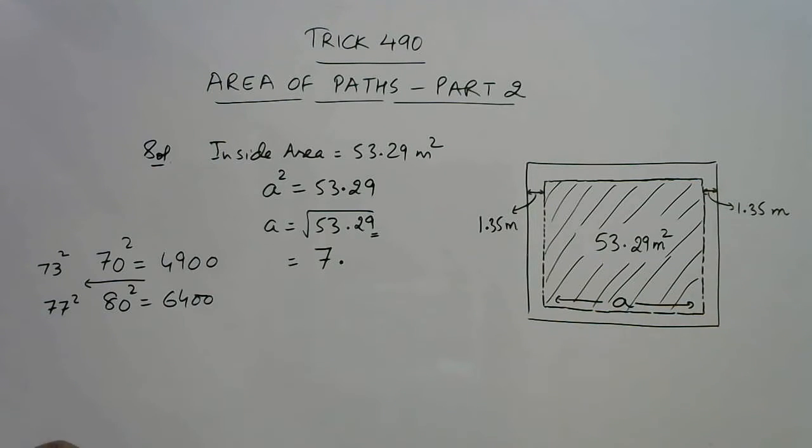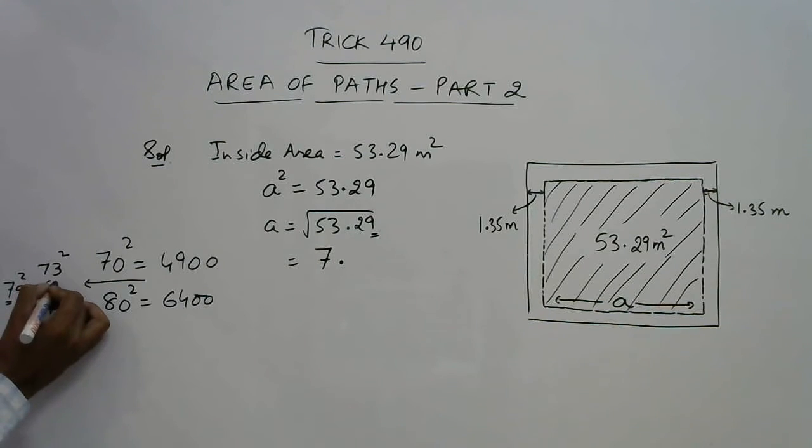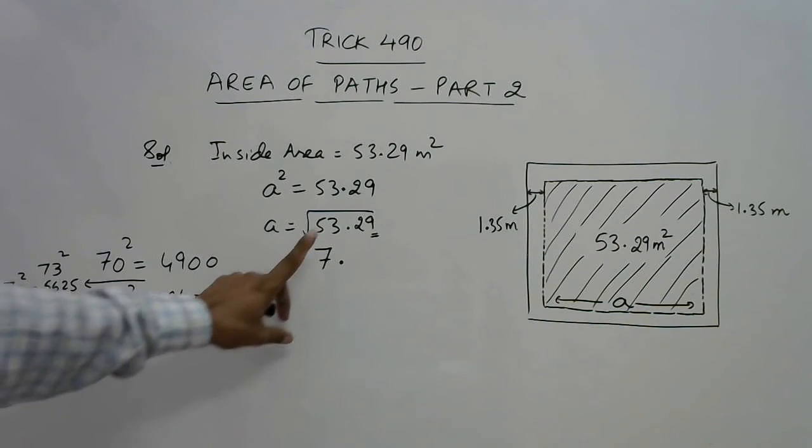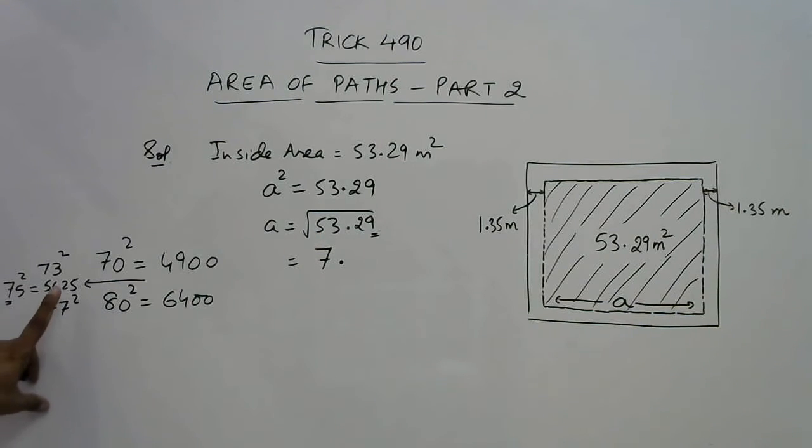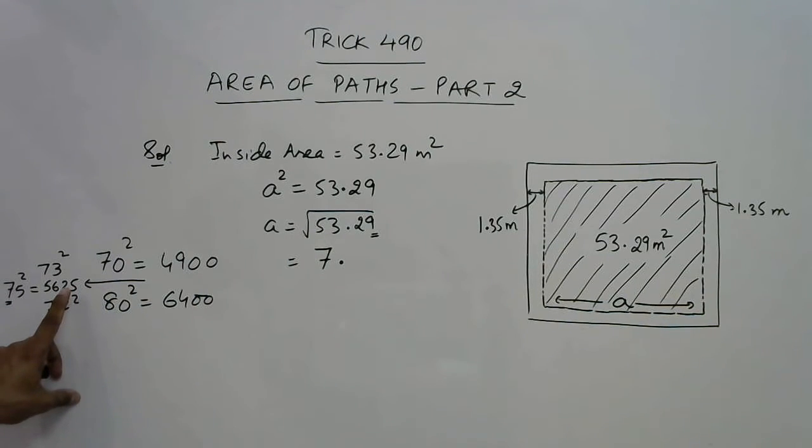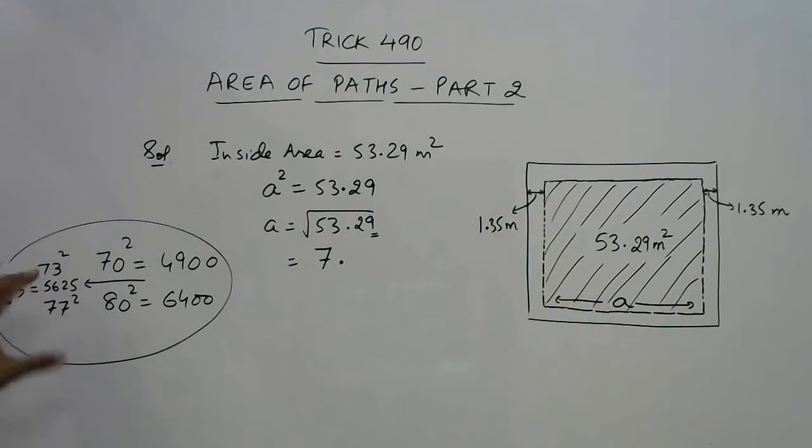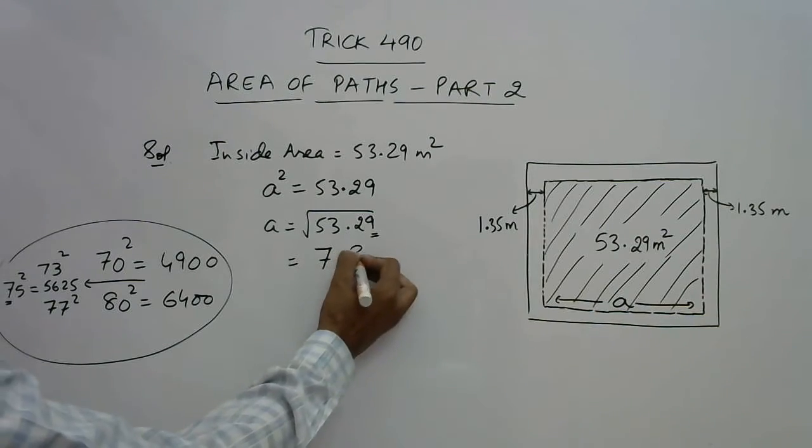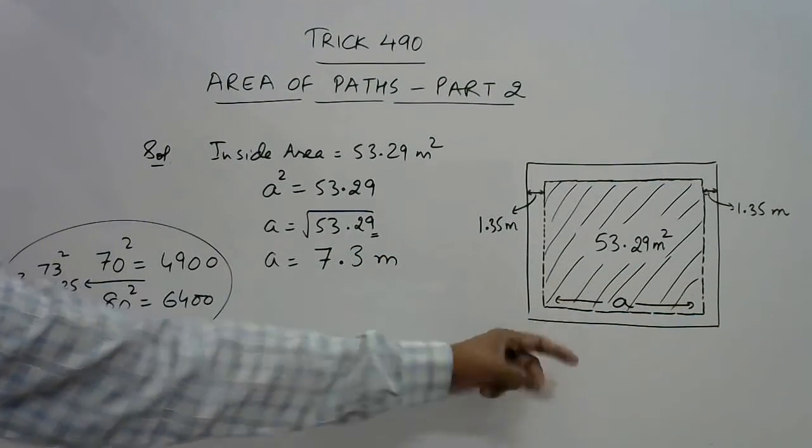For that you can use another shortcut. Just check 75 square. 7 into 8 is 56 and 25, so 75 square is 5625, and our number 5329 is smaller than 5625. So our answer is 7.3. If this number would have been larger than 5625 then our answer would have been 7.7. A simple shortcut through which you can find square roots of perfect squares very easily. Here we have the answer as 7.3.